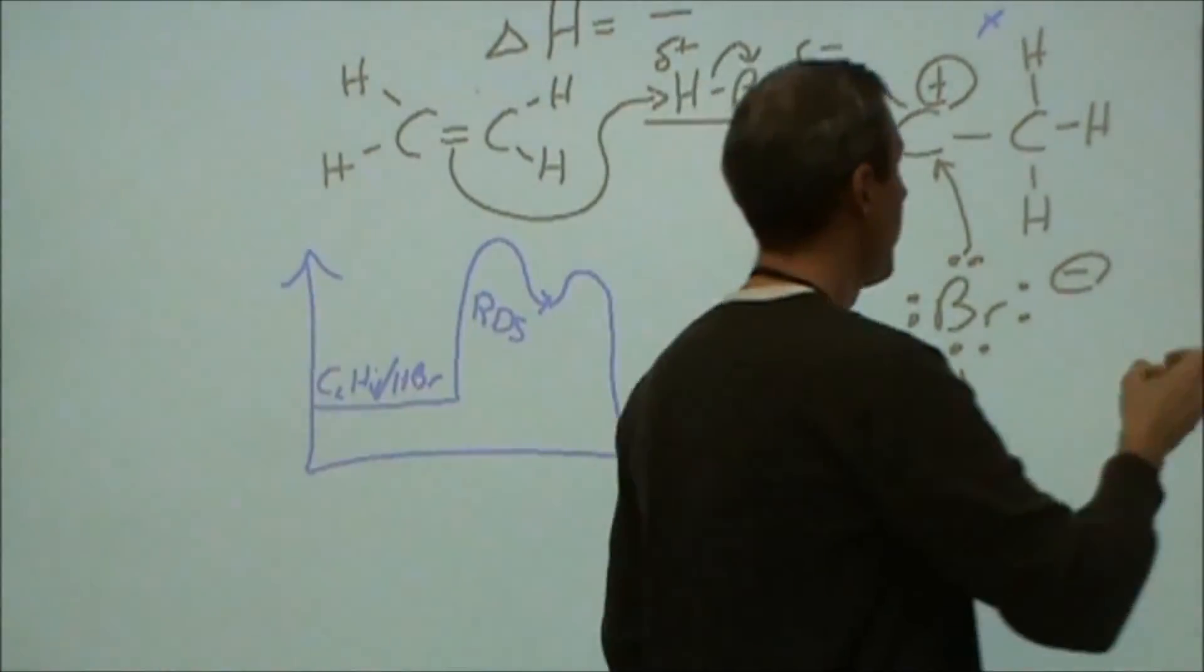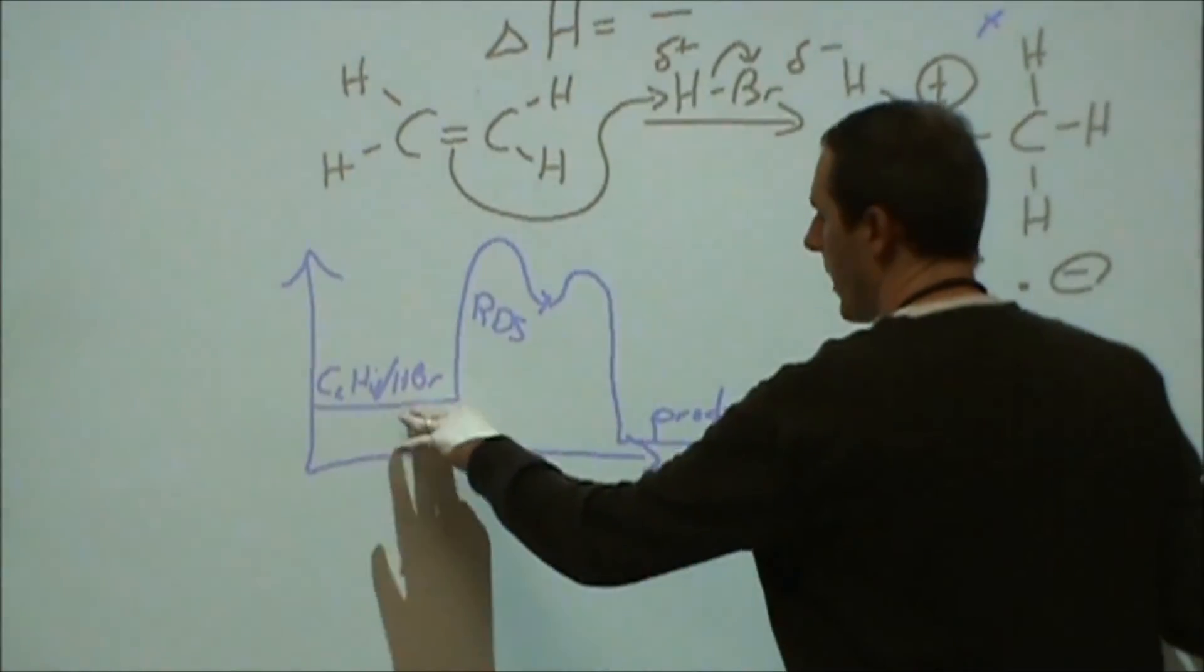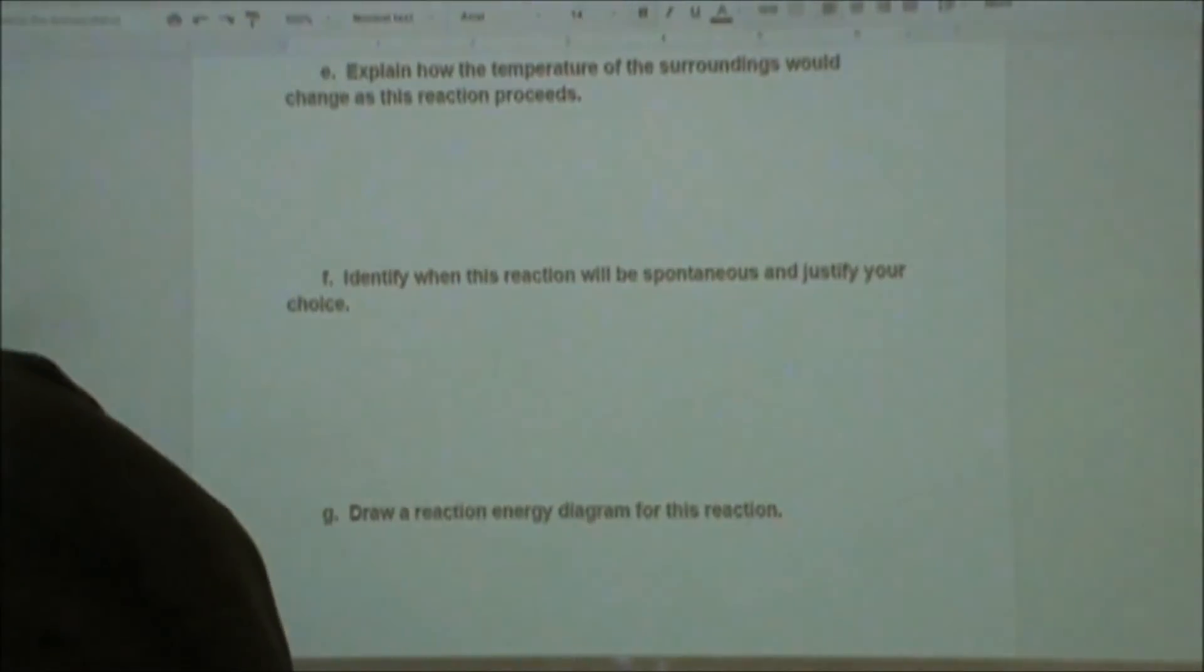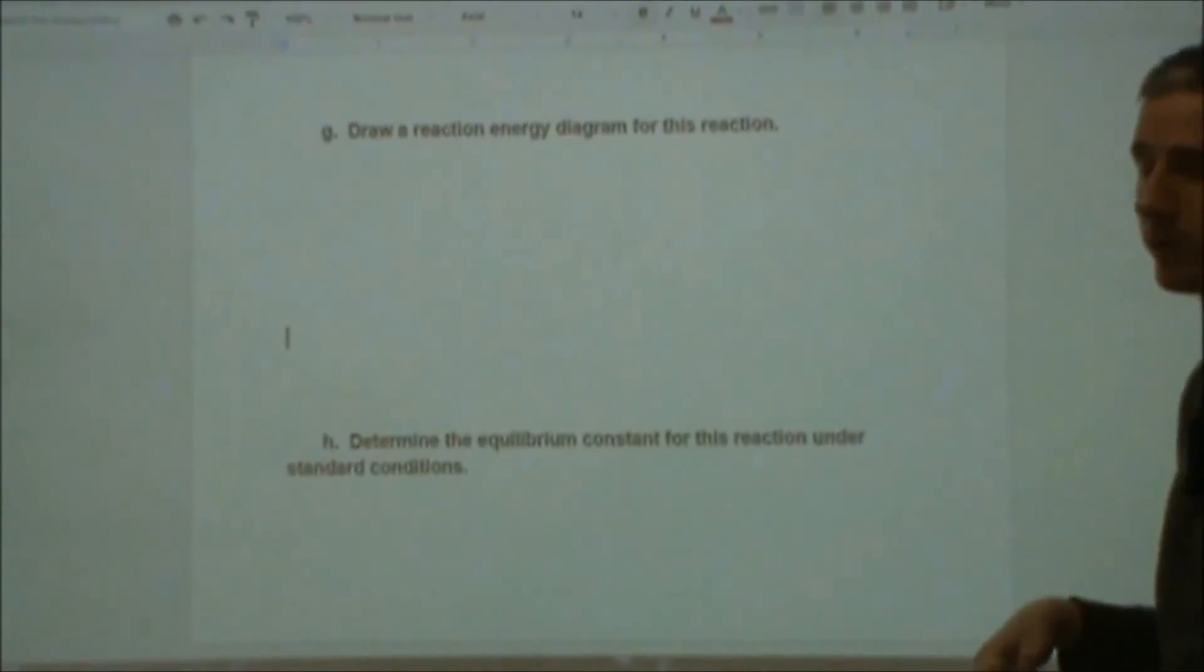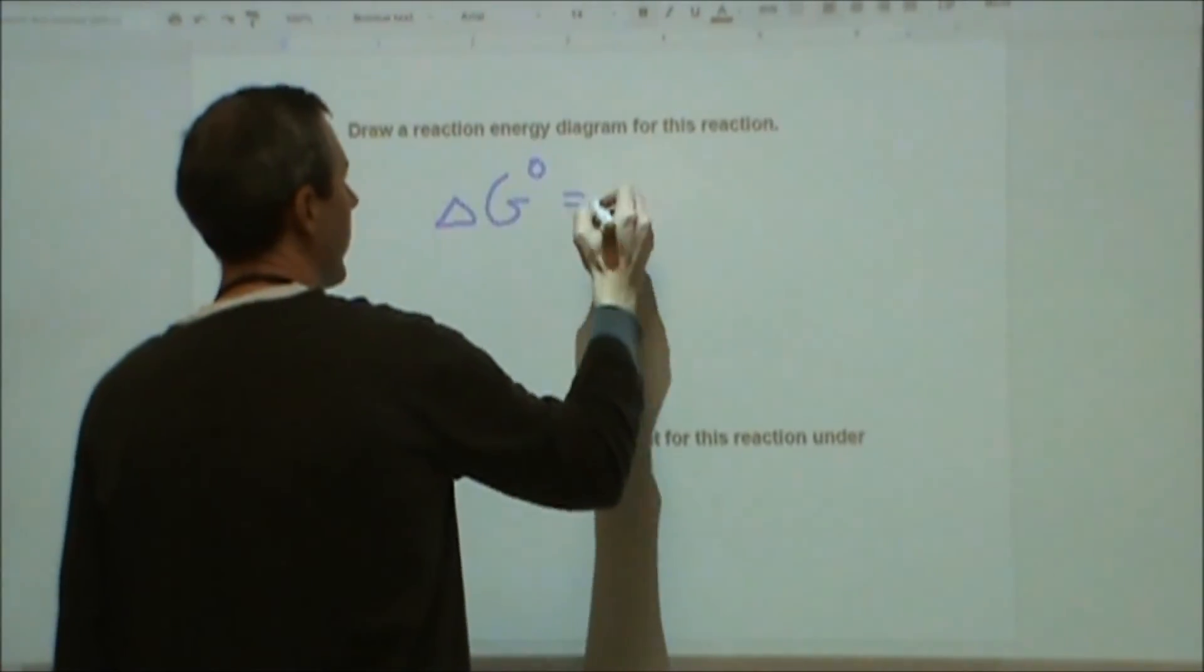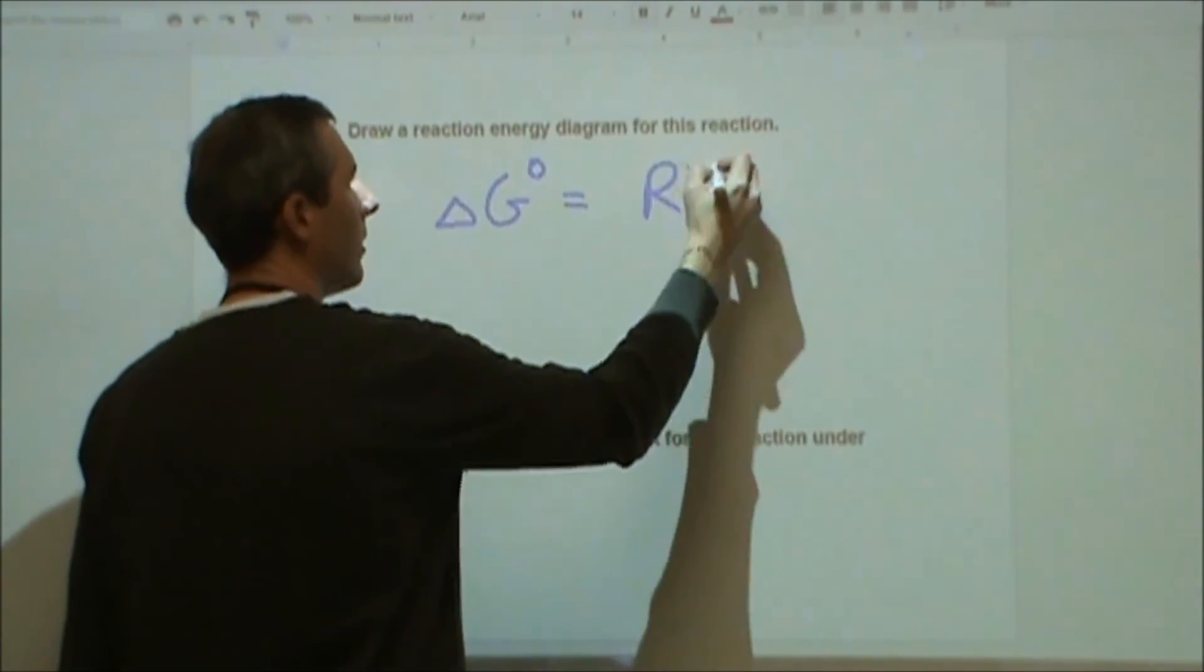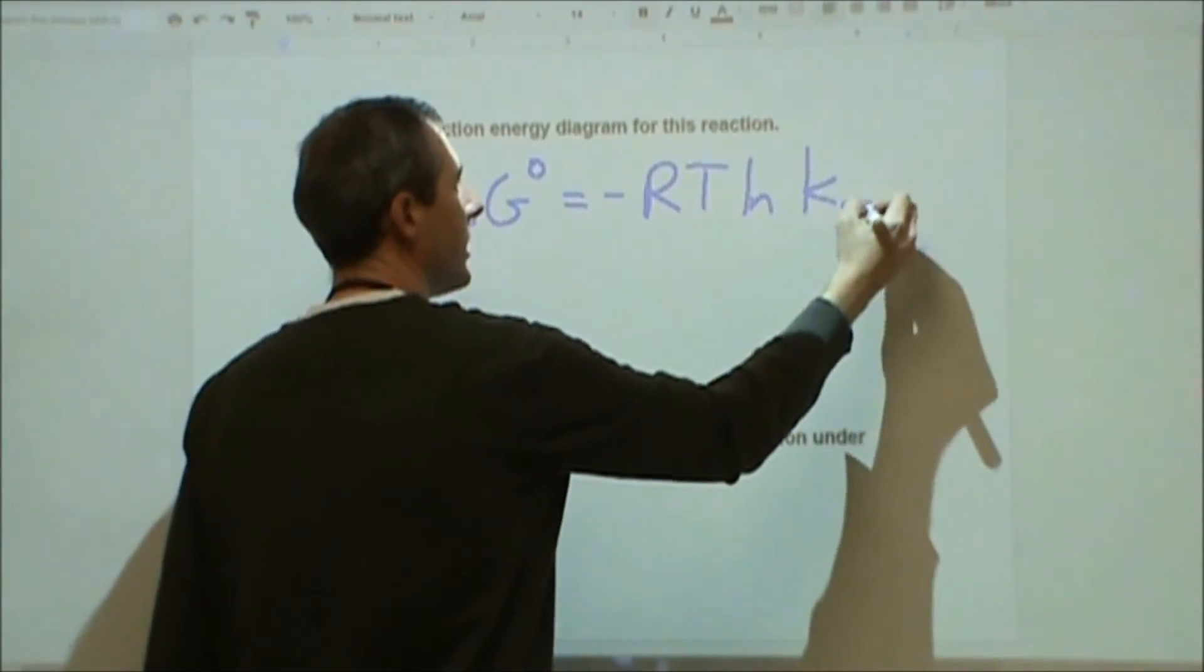So for example, in the next question, part G, it asks us to look at what's the equilibrium constant. But for that, all that matters is where we start and where we end as far as Gibbs free energy. So if we scroll down some more, determine the equilibrium constant for this reaction under standard conditions.